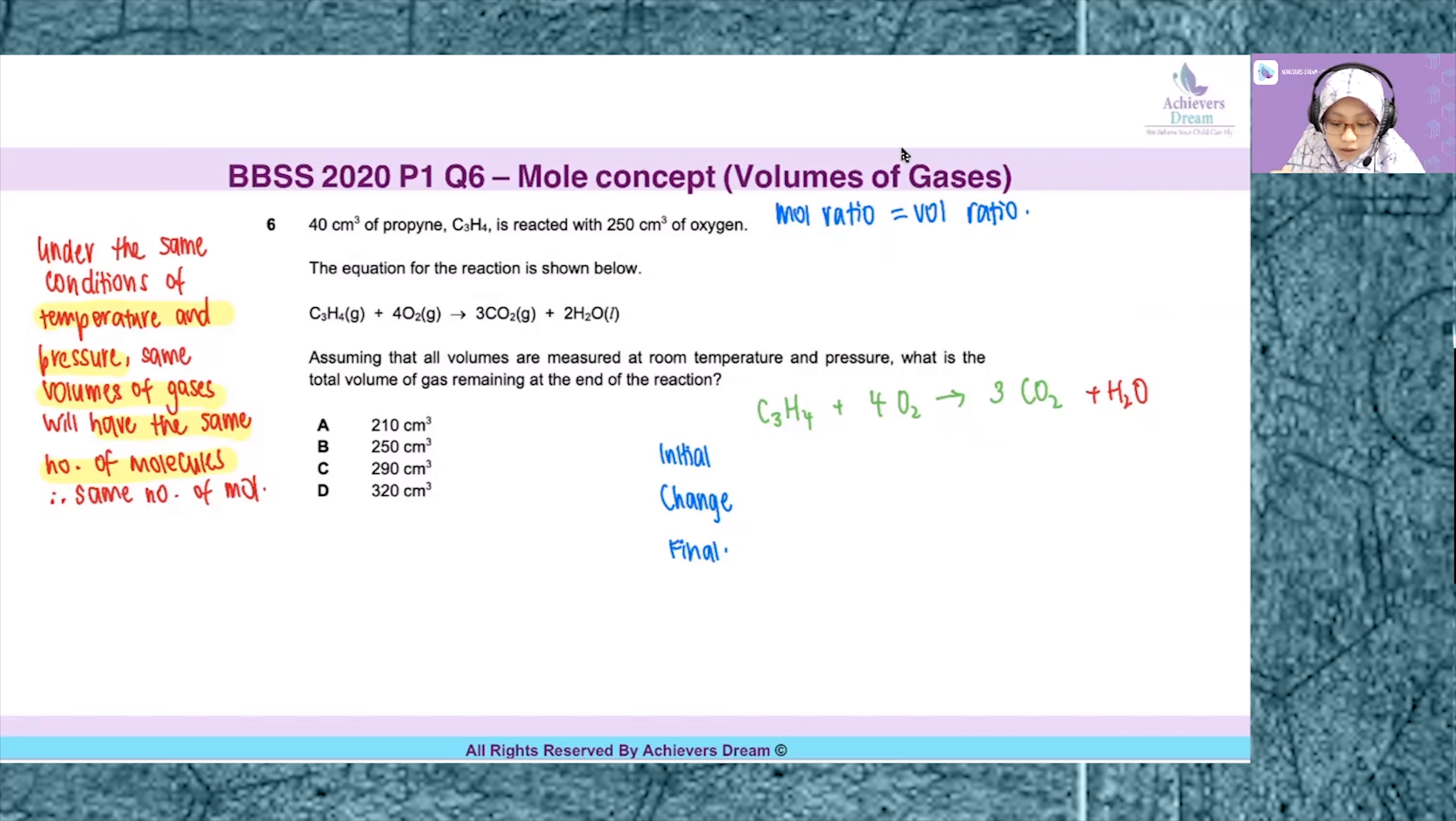Now let's compare. You are given the volume of propyne and oxygen, and these two are your reactants. When there are two pieces of information of reactants given, number one, you should find the limiting reagent.